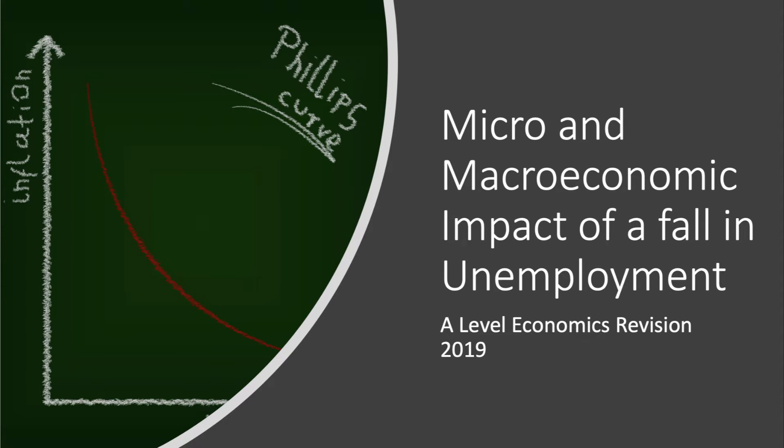Hi there and welcome to a short revision video. We're going to make a distinction between some of the micro and macroeconomic effects of a sustained fall in unemployment. Unemployment has been falling quickly in many countries, including the UK, where the labour force survey unemployment rate is now below 4%.